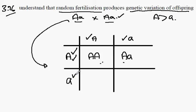Alternatively, this may fertilize this to give us big A, little a. And then finally, little a, little a. They can combine in a fertilization to give the homozygous recessive.